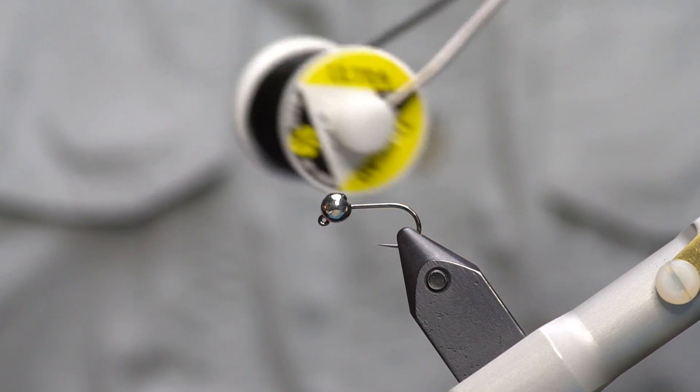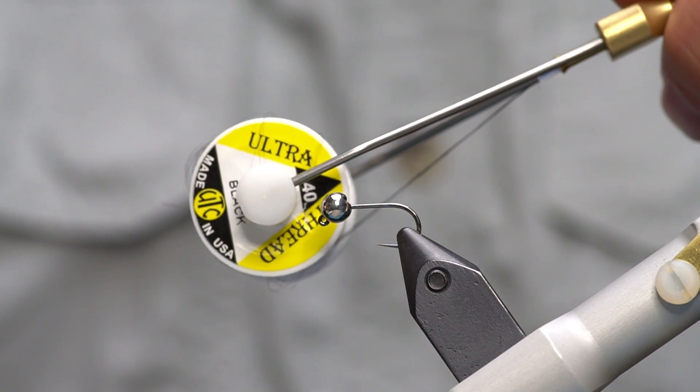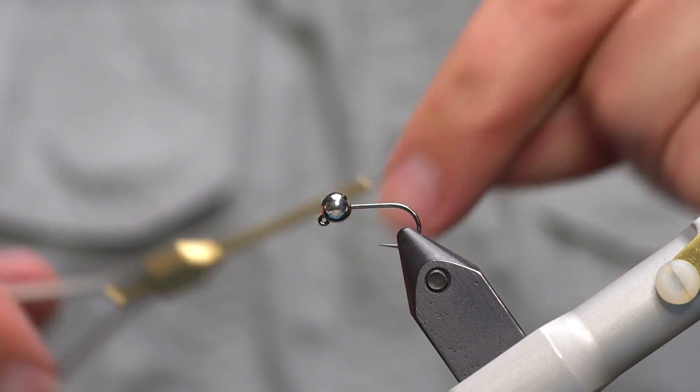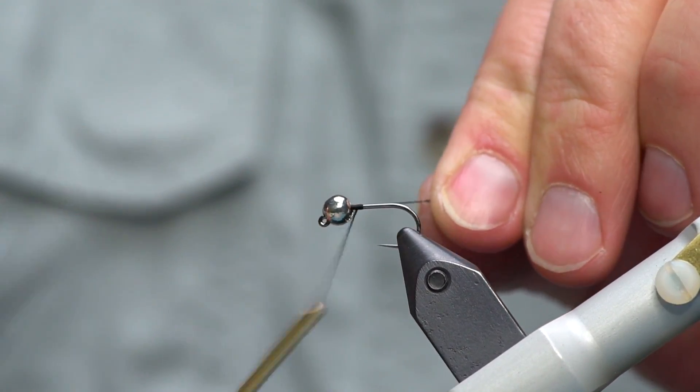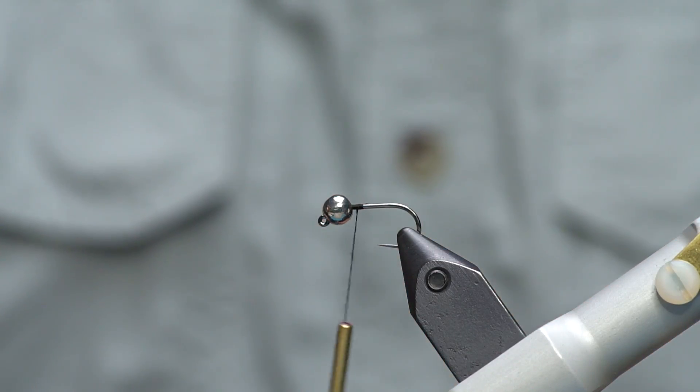Next up we're going to use some UTC Ultra Thread in 140 denier. This is just black and I'll start it right behind the bead, get it built up and then get rid of the excess.